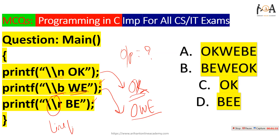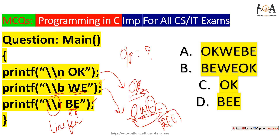After the third statement, which contains a carriage return \r, the cursor moves back to the front of the current line. 'BE' will overlap and replace the first two characters 'O' and 'W', while the 'E' remains as is. So the final output after execution of the third statement is 'BEE', and option D is the right answer.